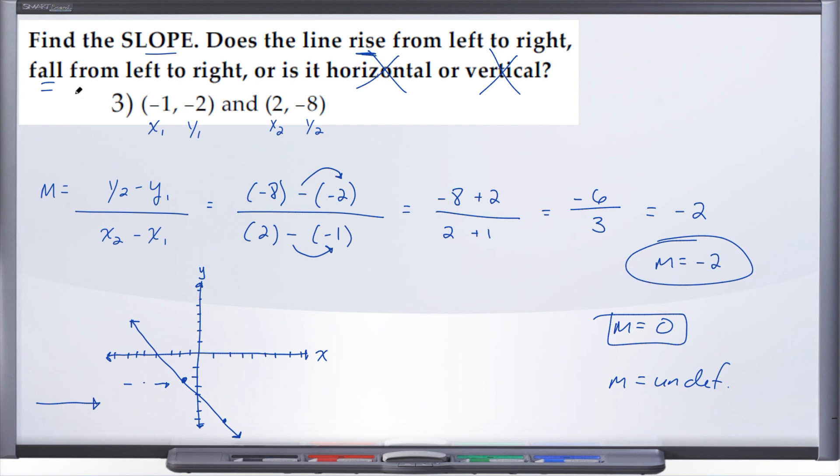Negative slope means falling. Positive slope means rising. If you have a slope of 0, that's horizontal. And if you end up with an undefined slope, that's vertical. All right, that was number 3. Let's go ahead and take a look at number 4. I'll see you there.